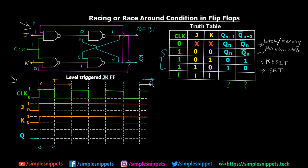Since this clock is going to be high for some amount of time — since this is a level triggered JK flip-flop — let's say this time is t equals 6 seconds. This is usually in microseconds or nanoseconds, but for understanding we assume 6 seconds, meaning the clock is high for 3 seconds. In that 3 seconds, this switching is going to happen again and again — Q is now 1, fed back, causing the output to switch once more.